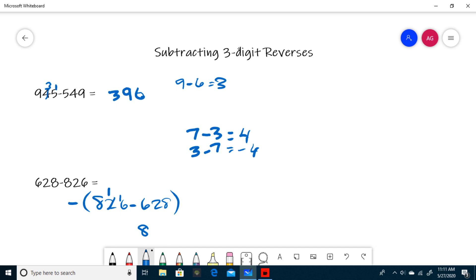I'm subtracting reverses, so the tenth digit is going to be a 9. And to find the hundreds digit, I do 9 minus my ones digit, or 1. So 628 minus 826 is negative 198.